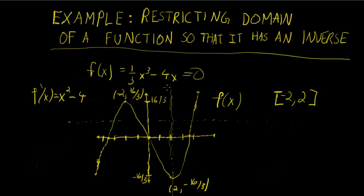So it looks like if we just restrict the domain to any of these individual segments, so this is one possible domain restriction. Another possible domain restriction is x ∈ [2, ∞).